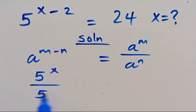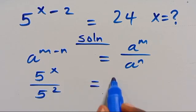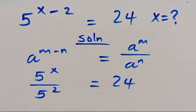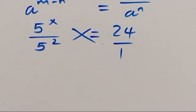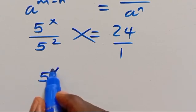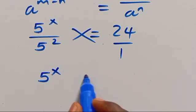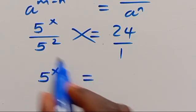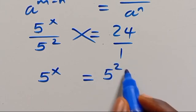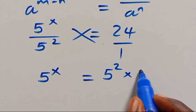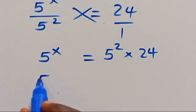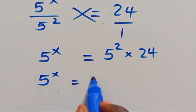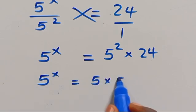divided by 5 to the power of 2 equals 24. When you cross multiply, 5 to the power of X times 1 will be 5 to the power of X equals 5 to the power of 2 times 24. We have 5 to the power of X equals 5 times 5 times 24.